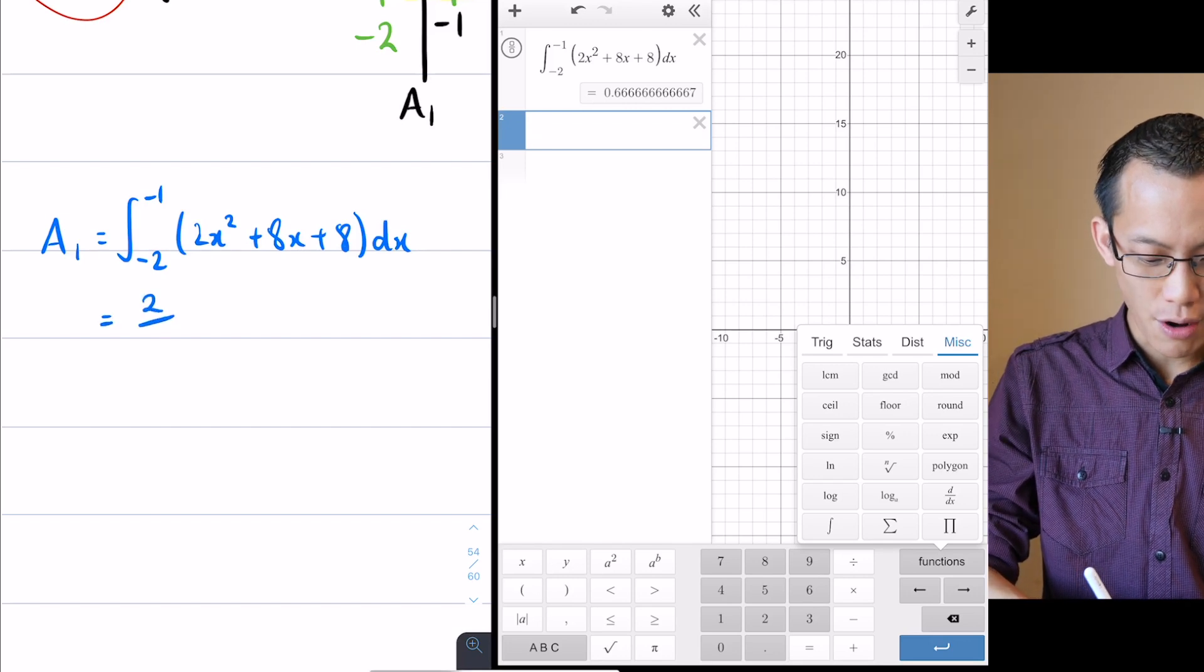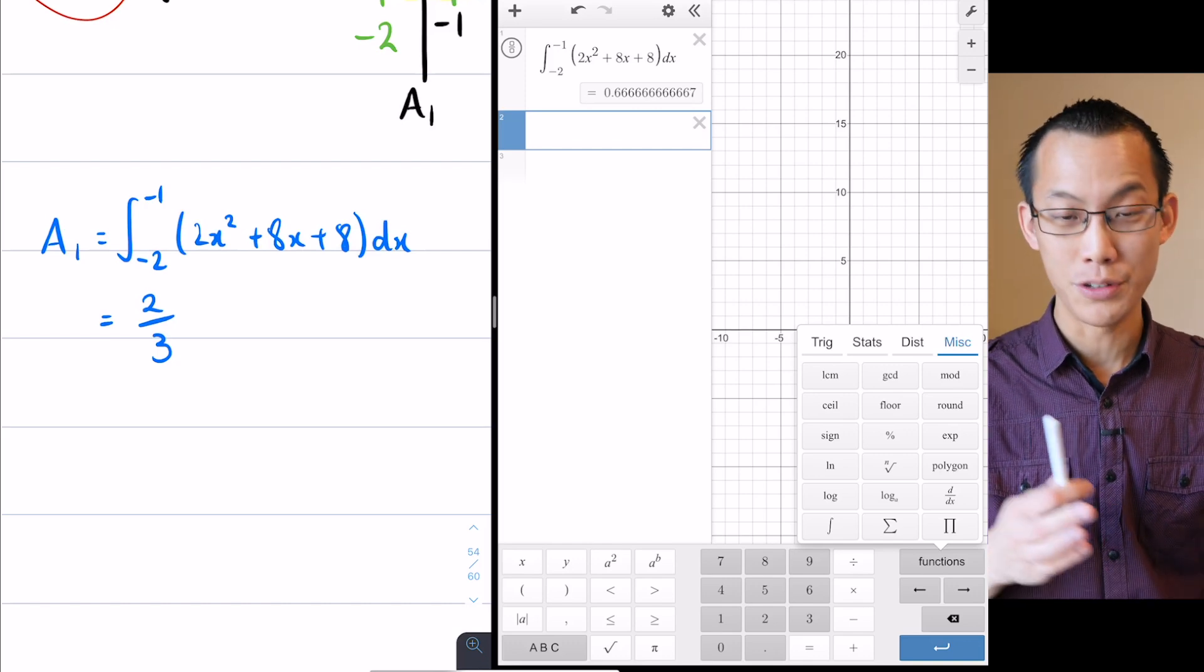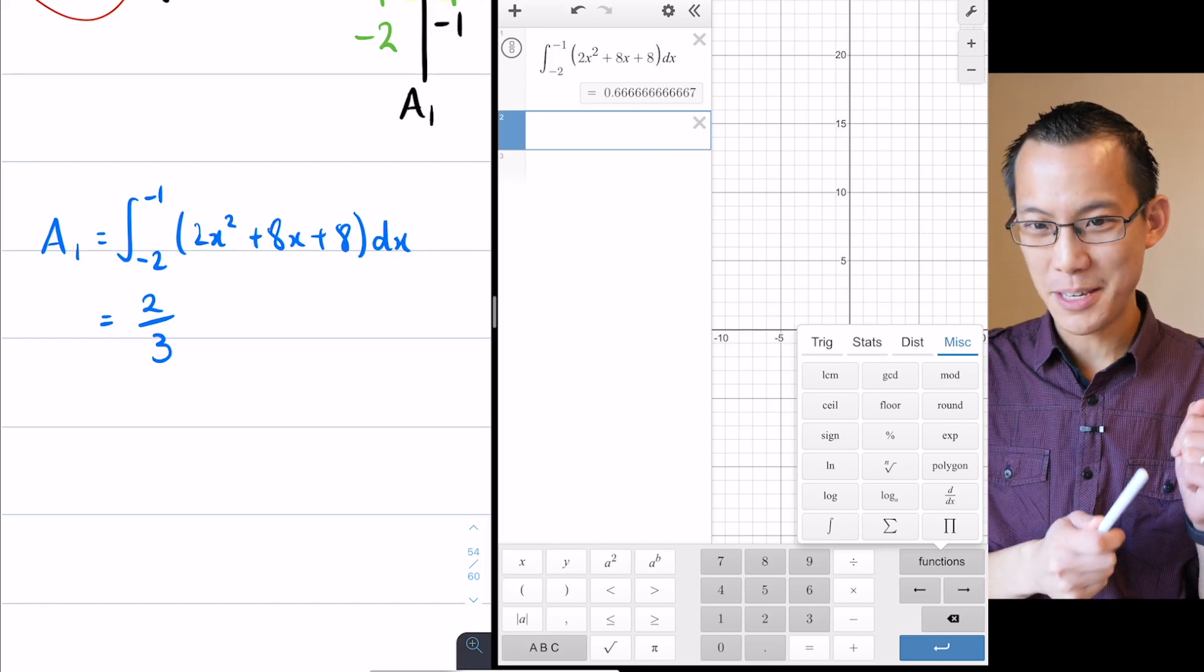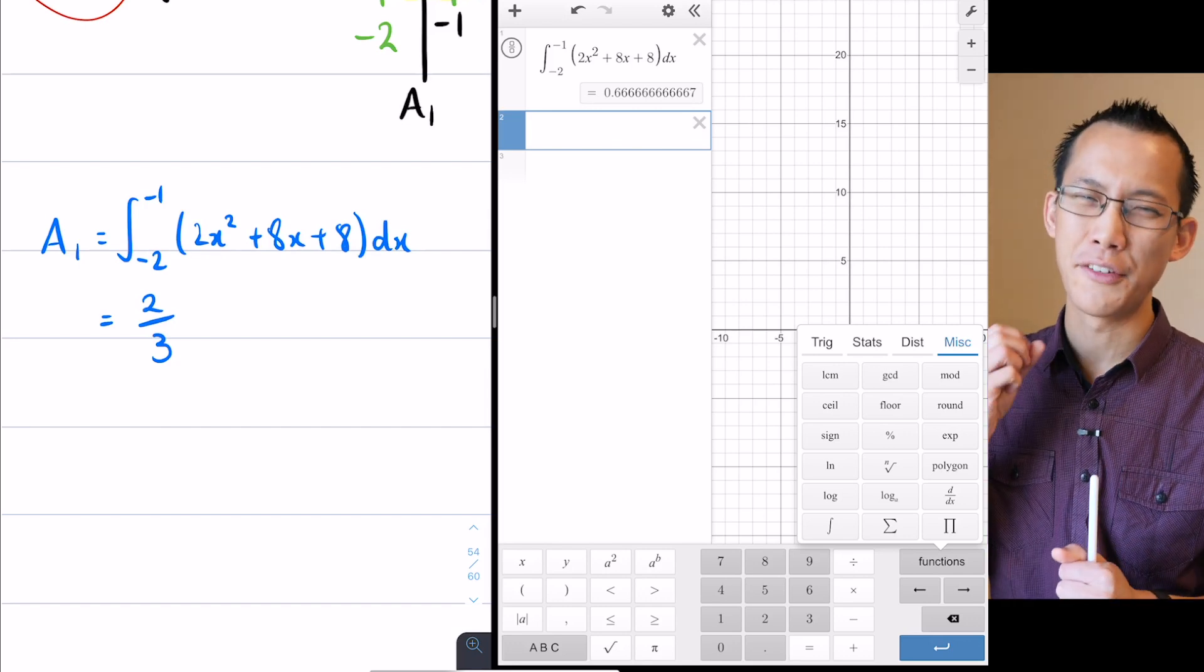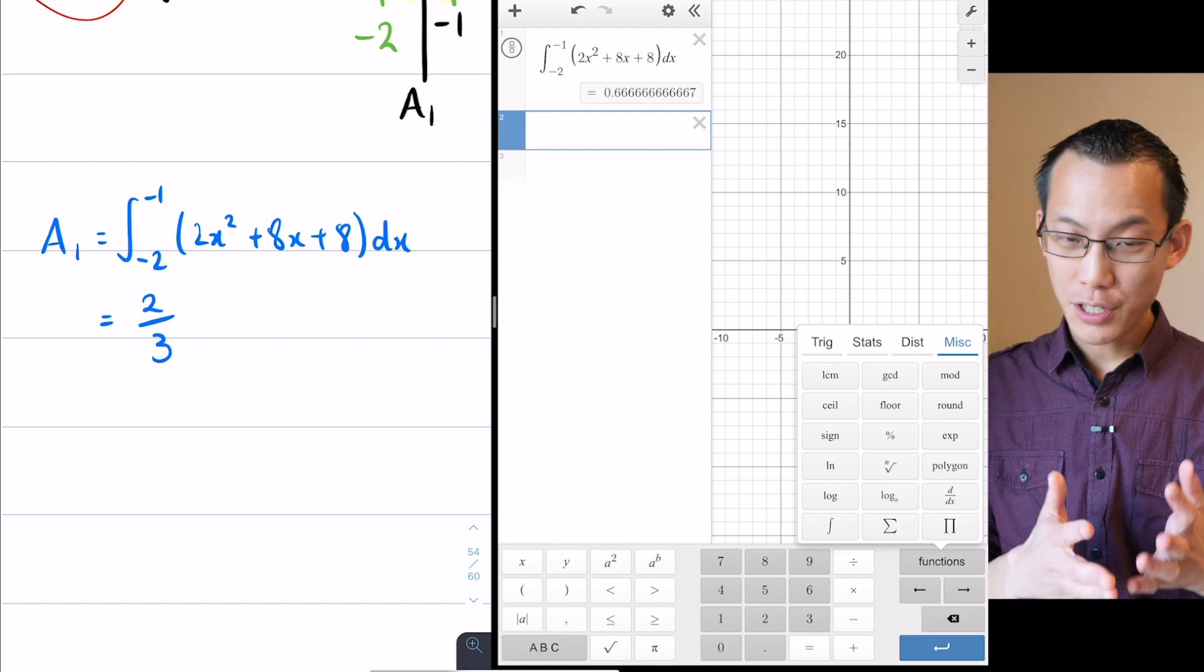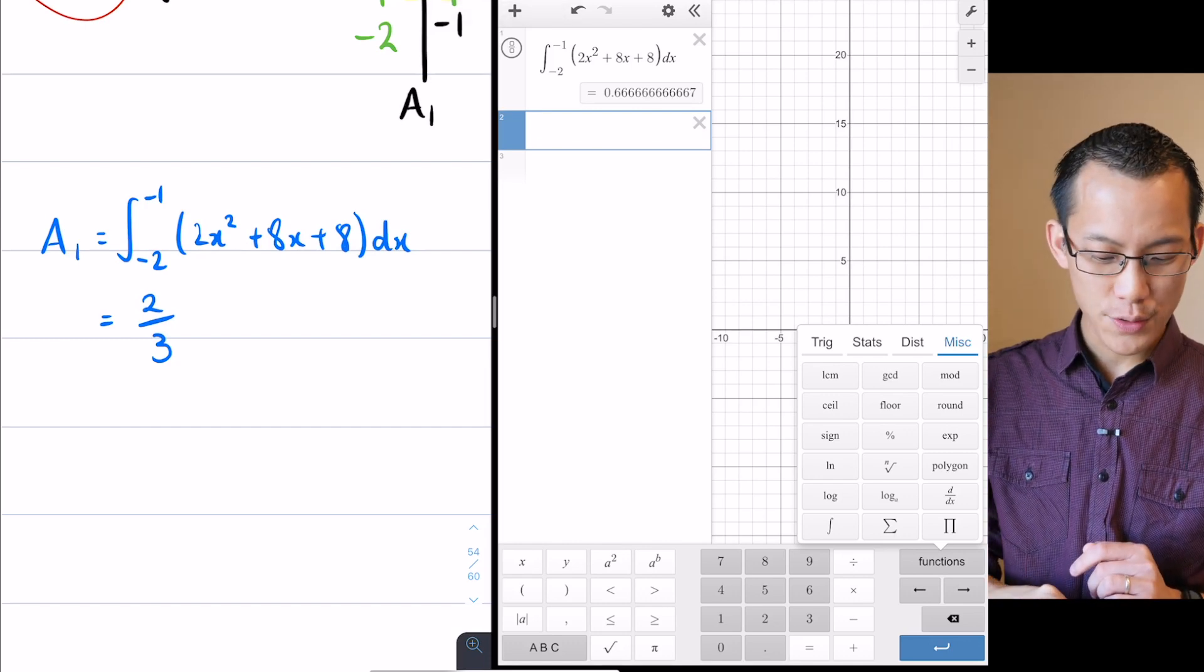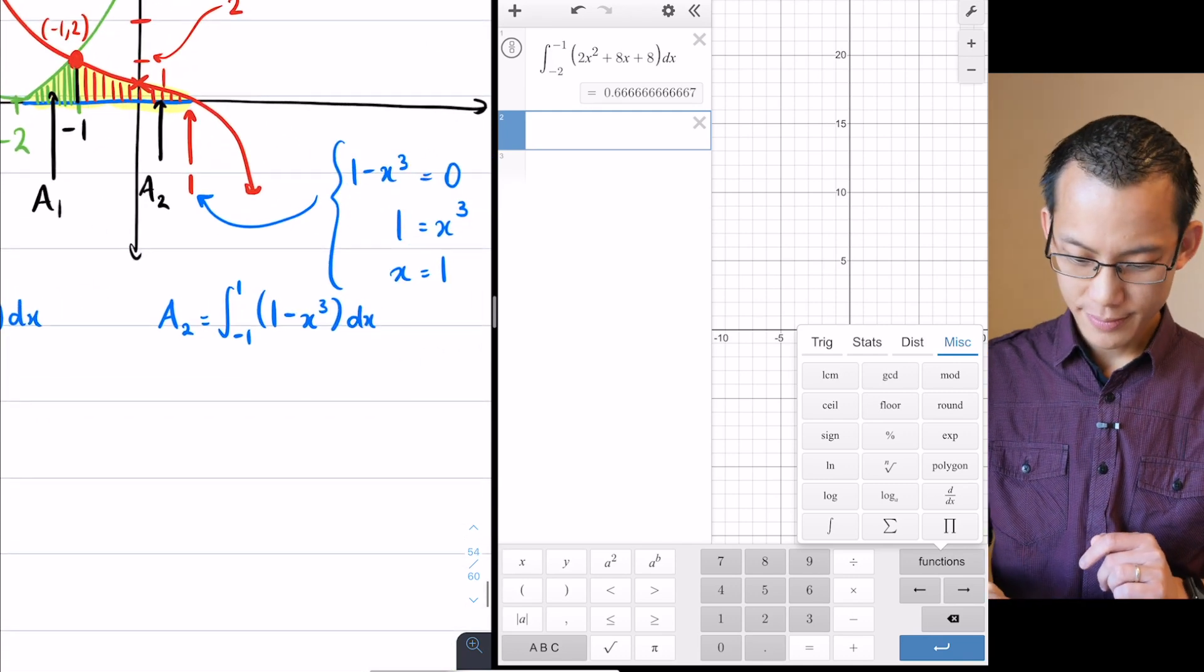So there's the integral for A₁, it does give us a value of 2 over 3. Just to really emphasize for anyone who did miss it, I'm not saying you can just put this into Desmos and you've got an answer. You're gonna have to do this by hand, but this is a nice way to confirm that you did get the right answer.